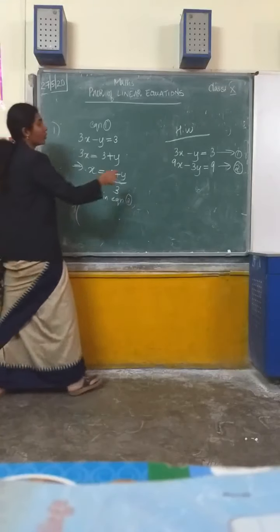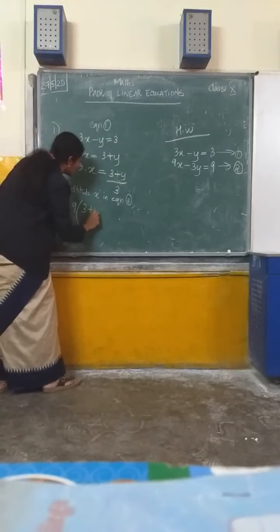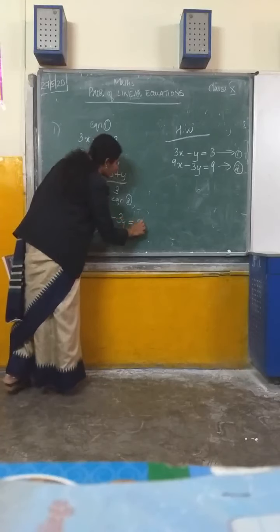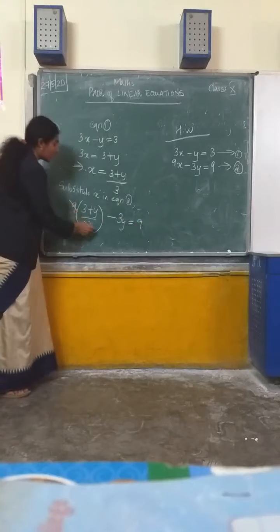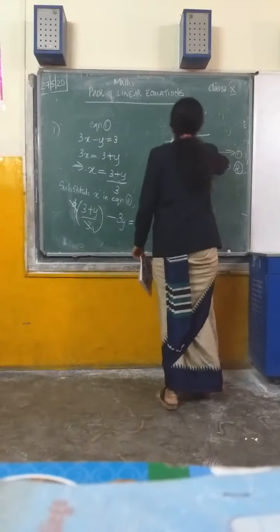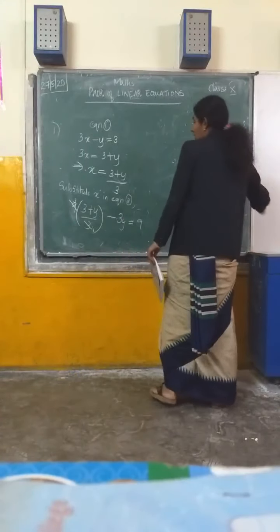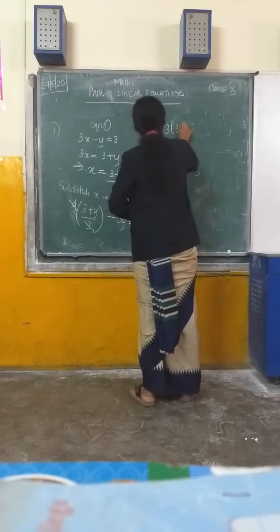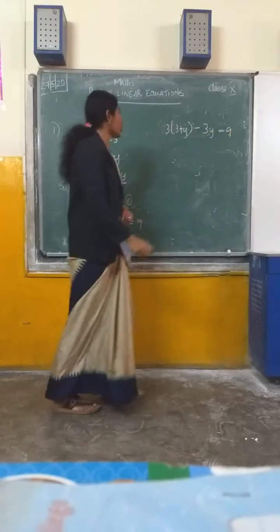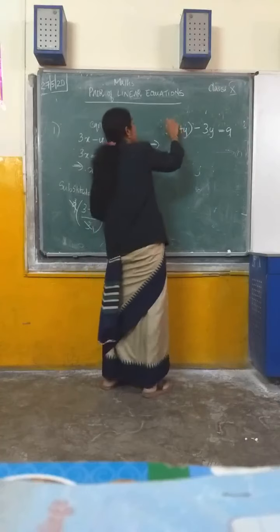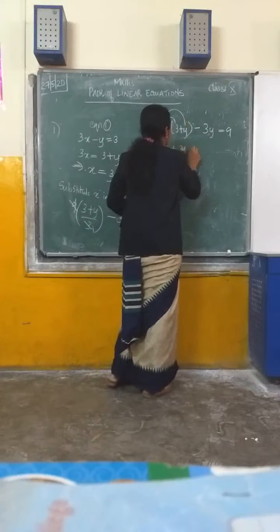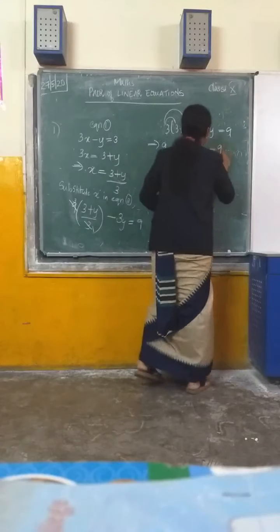9 multiplied by x, which is (3 plus y) divided by 3, minus 3y equal to 9. Since 9 and 3 are both divisible, 9 divided by 3 gives 3. So you will get 3 into (3 plus y) minus 3y equal to 9. Next, what should you do? Open the bracket.